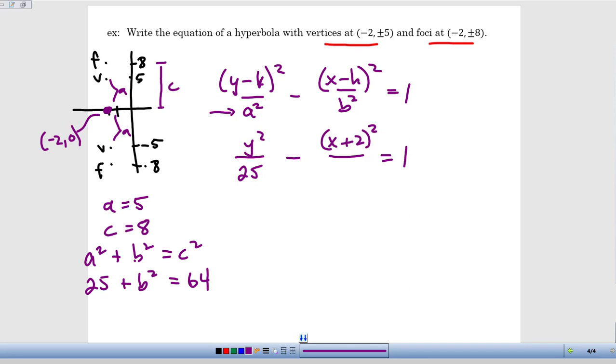We can now solve for b². So if we subtract 25 from both sides, we're going to get b² is equal to 64 minus 25, which is 39. And as we saw with the ellipse examples previously, we don't actually have to solve for b, we just need to know what b² is since that's what we need in the equation. So I can just plug in 39 right there into my equation. So that's how we can from the given information piece together the equation of a hyperbola.